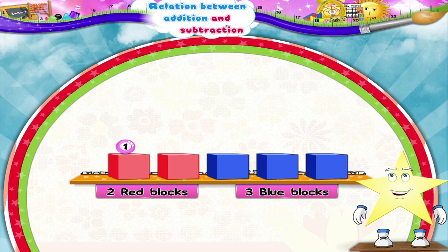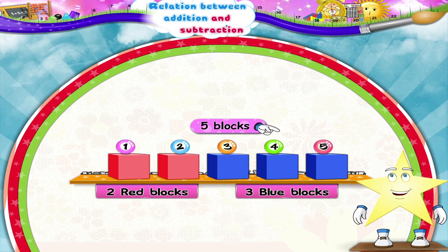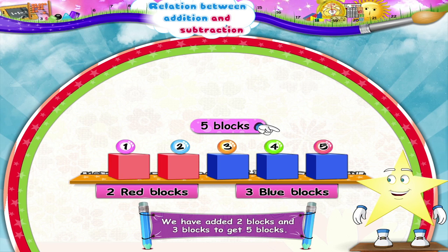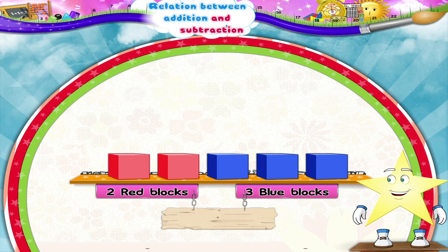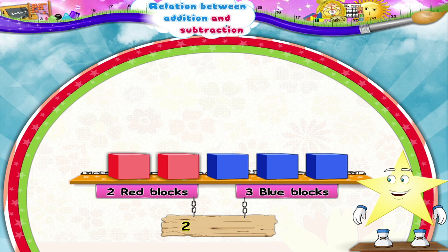One, two, three, four, five. Five blocks. We have added two blocks and three blocks to get five blocks. So, two plus three equals five. Addition.